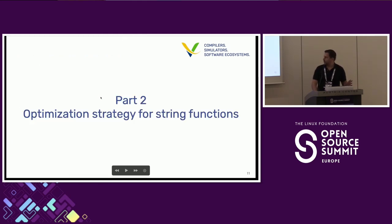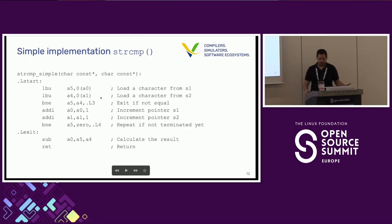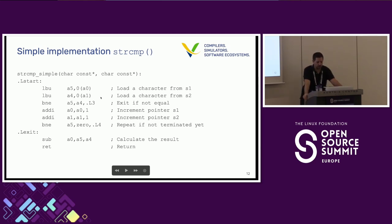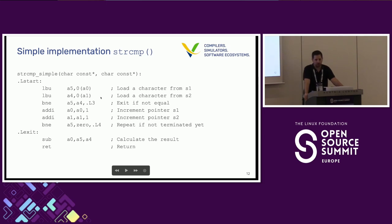What about the strategy for string functions? A string function operating on byte level needs to load bytes in a loop, do whatever checks are necessary, increase the pointer, and then have a conditional branch that either loops back or goes to an exit node. There's nothing wrong here, but it's just a little bit slow if the string is quite long, because we're doing the calculation on a byte-per-byte level.